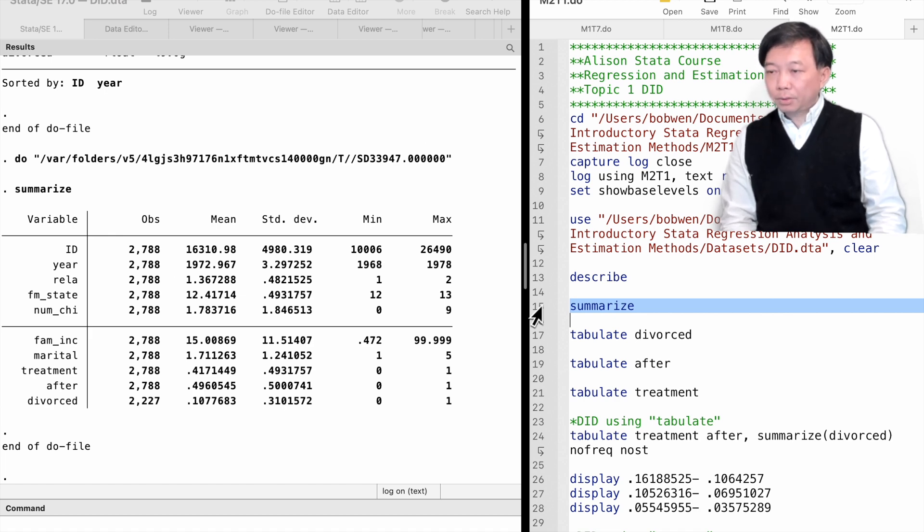The treatment here is the enforcement of the law in 1973 in Indiana. The treatment group is the families in Indiana. The control group is the families in Illinois. I collected the marital status information before and after the law enforcement for the two states.